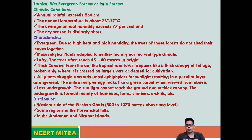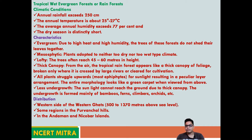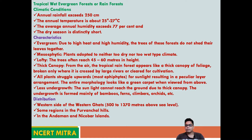All plants struggle upwards to get sunlight, giving the forest an umbrella-type vegetation cover. If you visit the Western Ghats in southern India, you can find this canopy-type vegetation. Epiphytes are plants that struggle upwards to get sunlight, since without sunlight they cannot produce food. Undergrowth is very less because sunlight cannot reach the forest floor; without sunlight, no grass or other plant can grow.